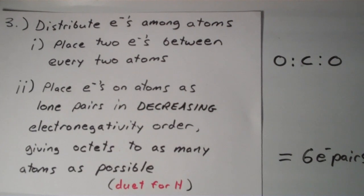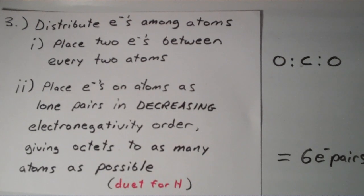So once you place 2 electrons between every 2 atoms, you want to place electrons on atoms as lone pairs. And you want to do this in decreasing electronegativity order. So that means you start adding these lone pairs to the more electronegative elements first. Then you move on to the central atoms, which are less electronegative.